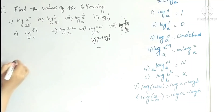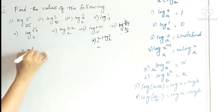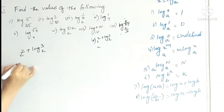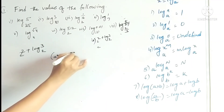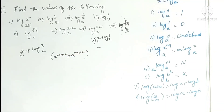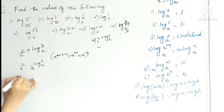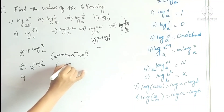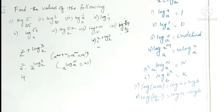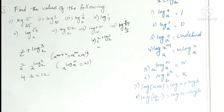The last problem is 2 to the power (2 + log 3 base 2). This is in the form a^(m+n) equals a^m × a^n. So we write 2² × 2^(log 3 base 2). Now 2² equals 4, and using the identity a^(log n base a) equals n, we get 2^(log 3 base 2) equals 3. Therefore 4 × 3 equals 12. That completes all problems in Exercise 1.5. Thank you for watching.